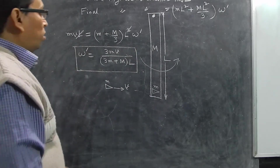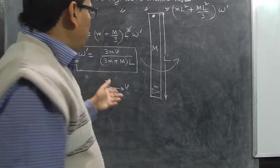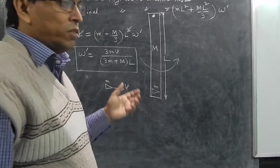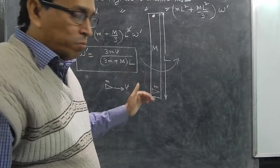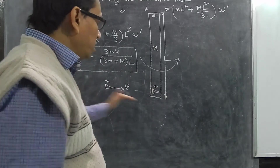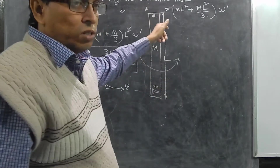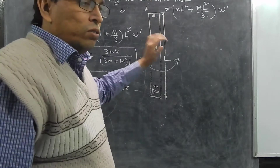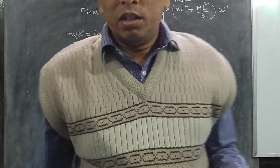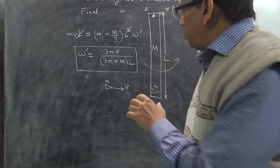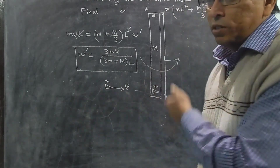So in this way we calculate the result for different bodies. This is a good example where one body is coming linearly, and when it gets embedded the total system starts rotating. In such problems we apply conservation of angular momentum — equating the initial angular momentum (linear momentum × perpendicular distance) to the final angular momentum.